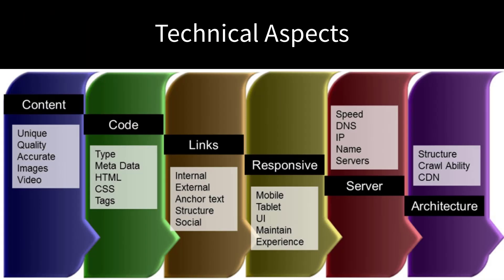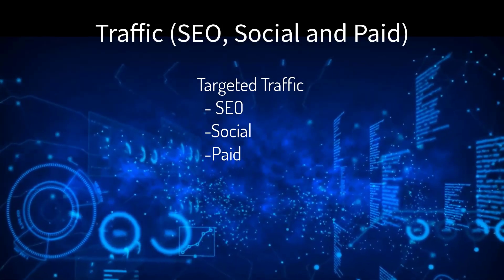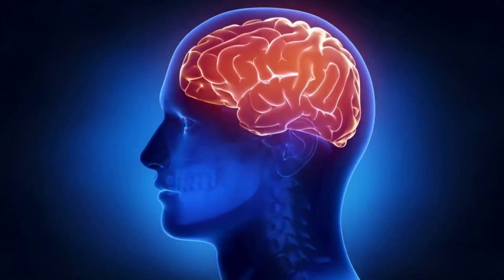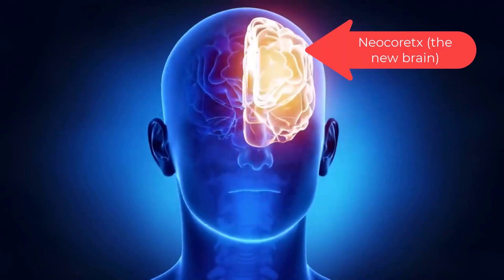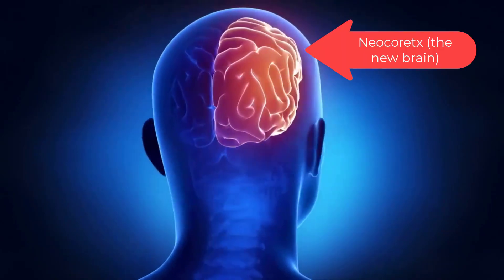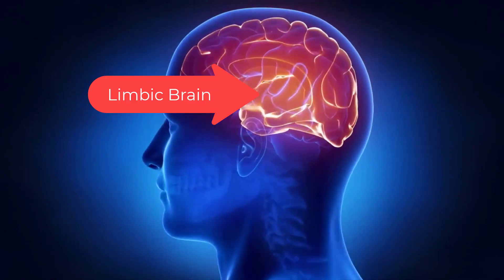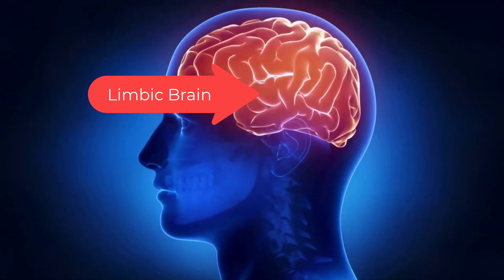The three elements are: the technical aspects — servers, layout, code structure; the traffic — SEO, social, and paid; and the psychology of conversions. Your brain has three basic layers and only one real decision maker. The neocortex thinks and processes rational data. The limbic brain feels emotions and is our instinct for fight-or-flight response.